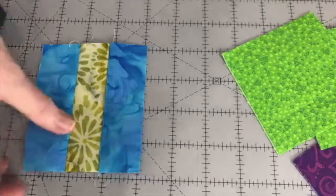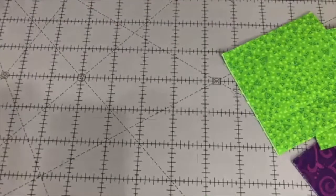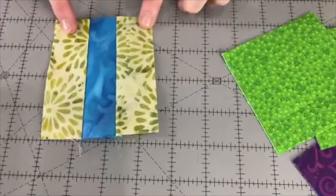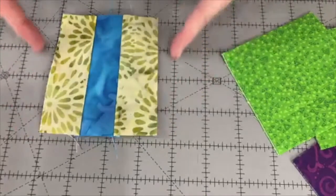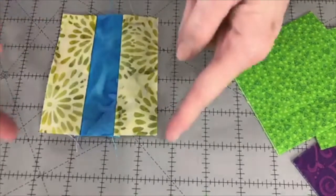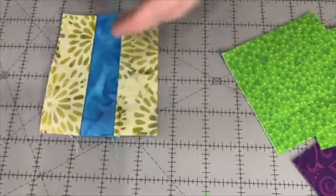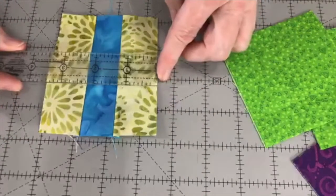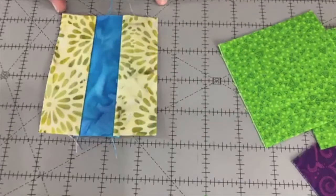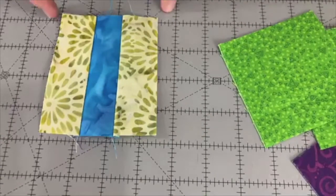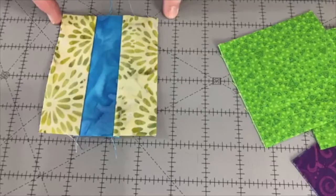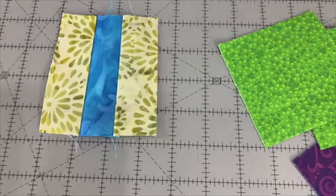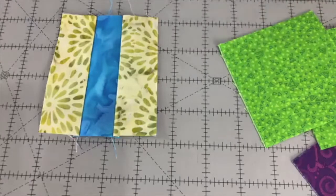So once you've got your seam tested, have you ever had something happen like this? Now, I don't know if you can tell, but if you look at this, this is not a perfect rectangle. All right. It's a little wide here at the top. It's absolutely perfect right here in the center. And it's a little skinny here at the bottom. And the reason for that is because I love to chain piece, love to throw under my units and just keep going and shoving the next one in.